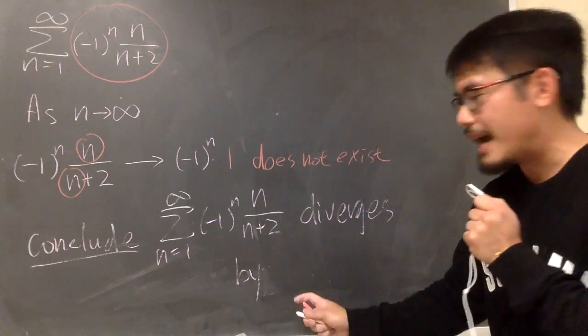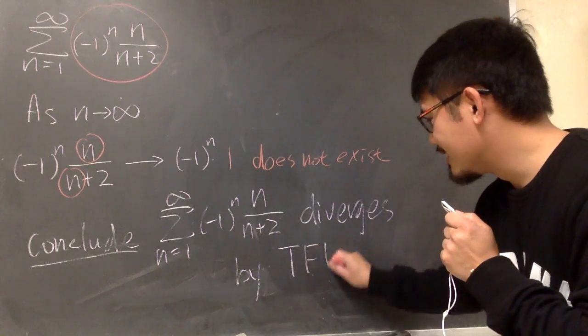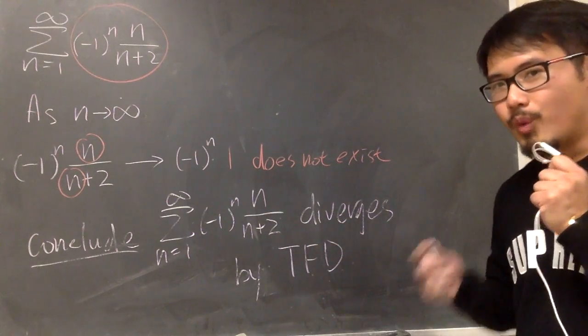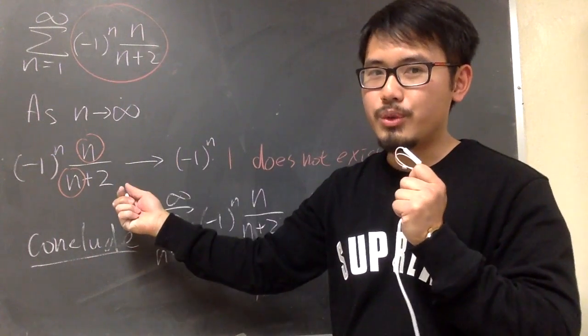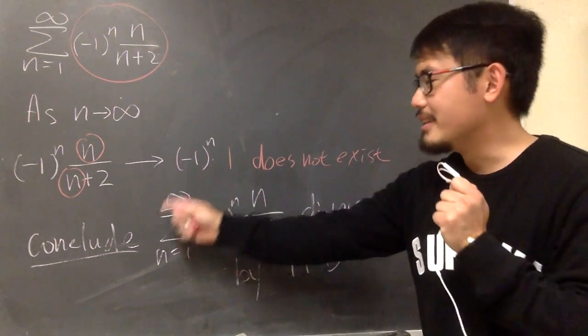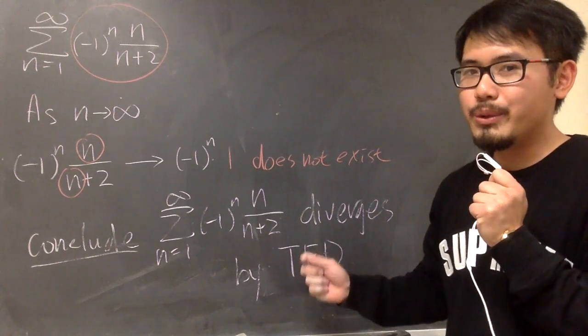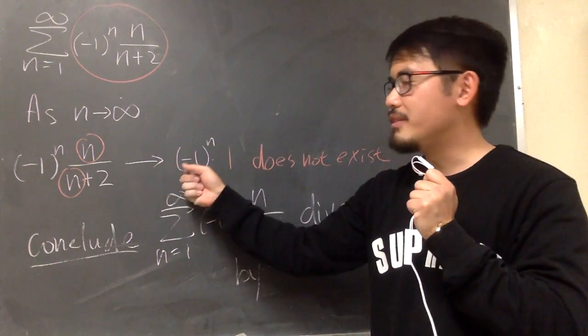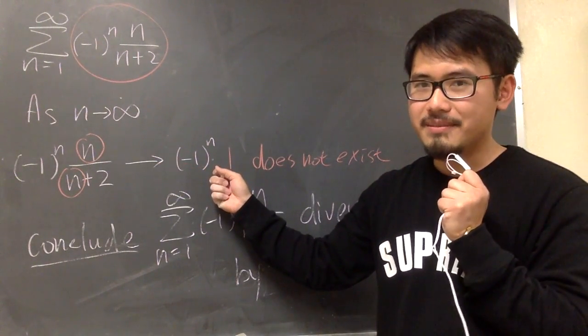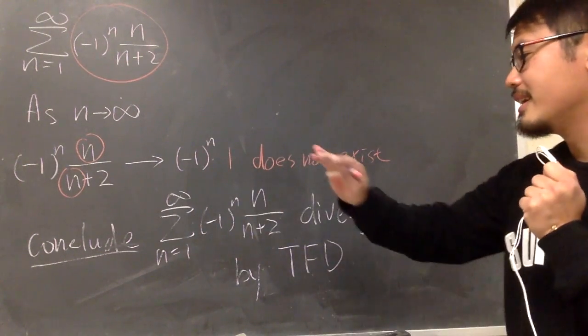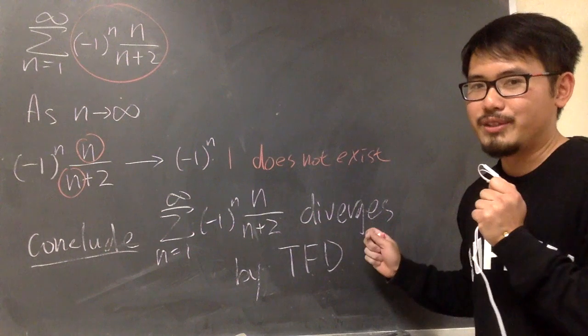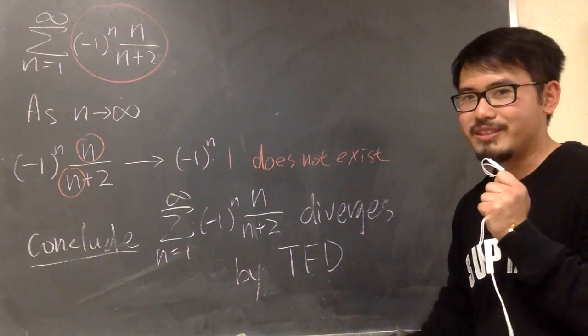And we know that it's because by the test for divergence. One more time, as long as the formula does not approach 0, then we can argue that the series diverges. Including the situation that when you have this limit being non-existent. This does not exist. We are good to say the original series diverges by test for divergence. That's it.